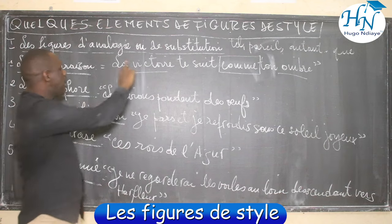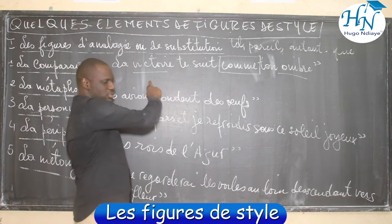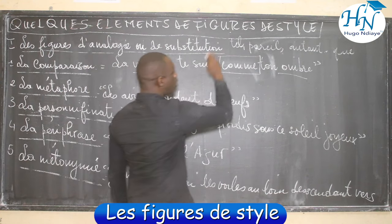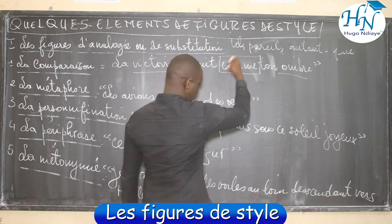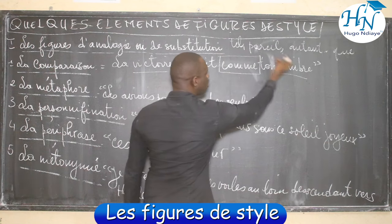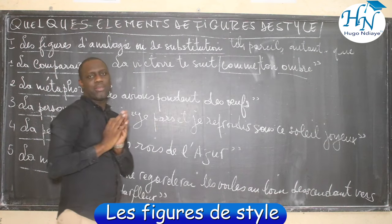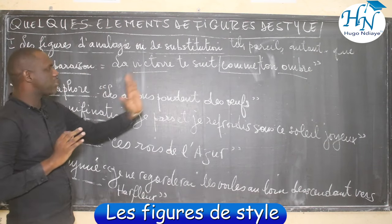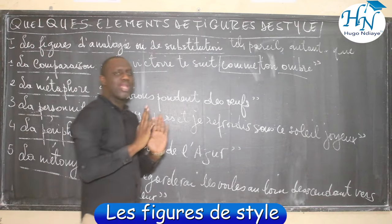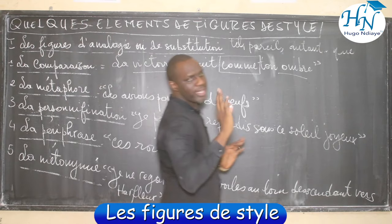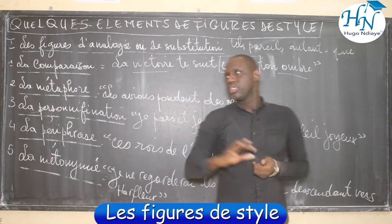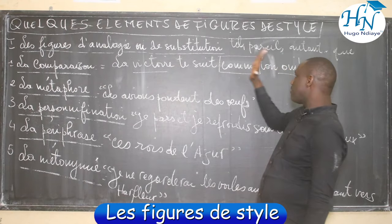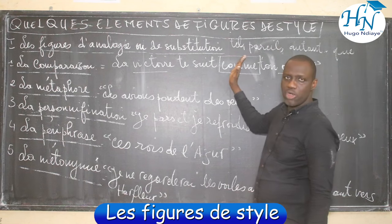Si l'élève voit deux éléments qu'on essaie de comparer avec un outil comparatif — tel, comme, pareil, autant que, aussi que, semblable — nous avons une comparaison. Par exemple : « la victoire » c'est le premier élément, « comme » c'est l'outil comparatif, « ton ombre » c'est le deuxième élément. Nous avons le terme comparé et le terme comparant — c'est ce qu'on appelle la comparaison.